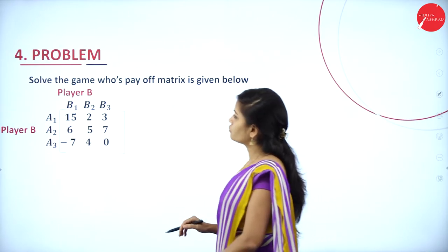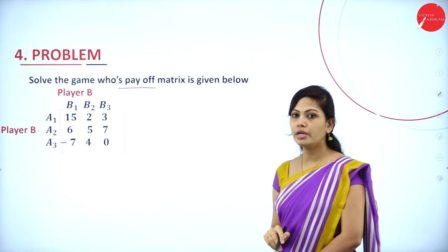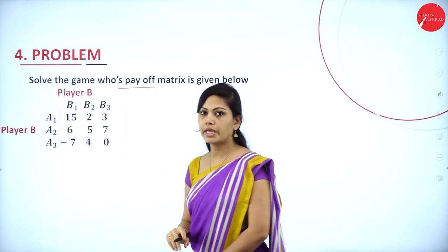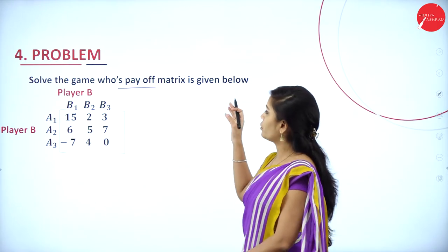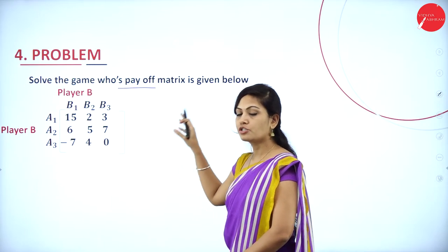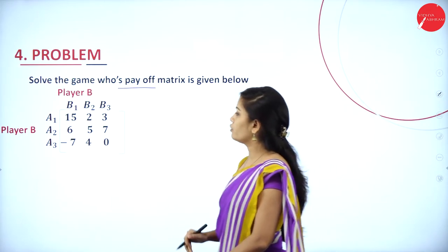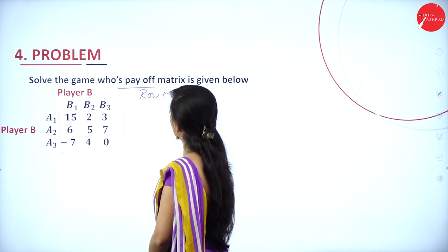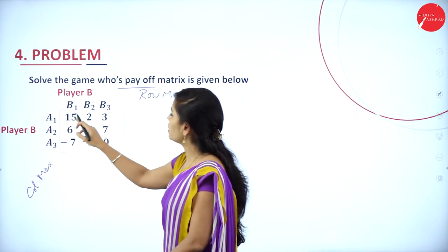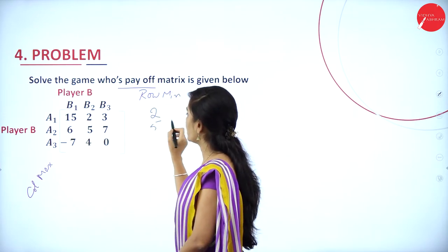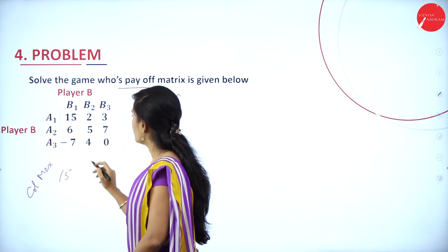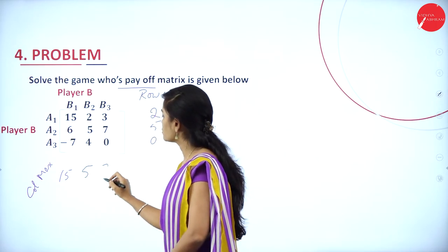Fourth problem: solve the game whose payoff matrix is given below. We have two players — player A and player B — with a 3×3 matrix. Find the saddle point and value of the game. Row minima: the least values are 2, 5, and 0. Column maxima: the highest values are 15, 5, and 7.